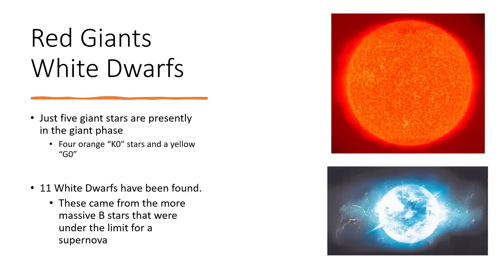Then we have 11 white dwarfs that have been located. Now there might be more of these that we haven't found yet, but those have all come from the more massive B-type stars and some of the hotter A stars that have evolved right through and become white dwarfs. Of course, the O-class stars and the hotter end of the B stars will probably have exploded as supernovae rather than leaving these things behind, so we might find a few neutron stars there, but so far none have been discovered.